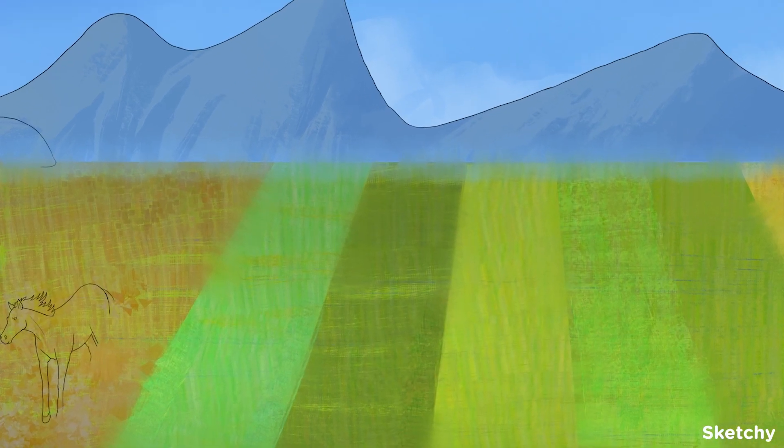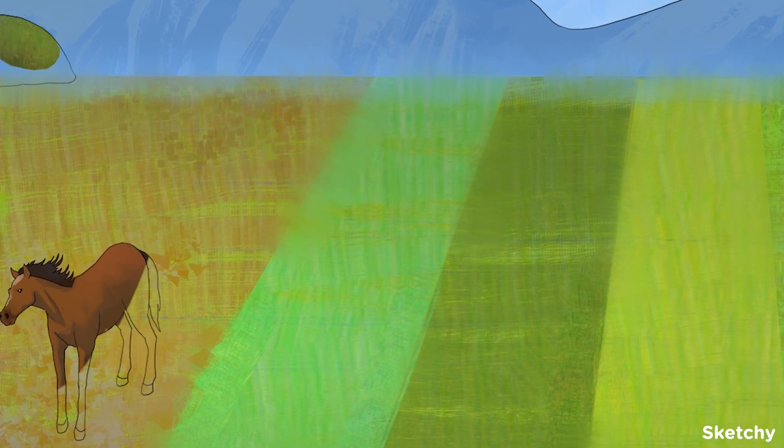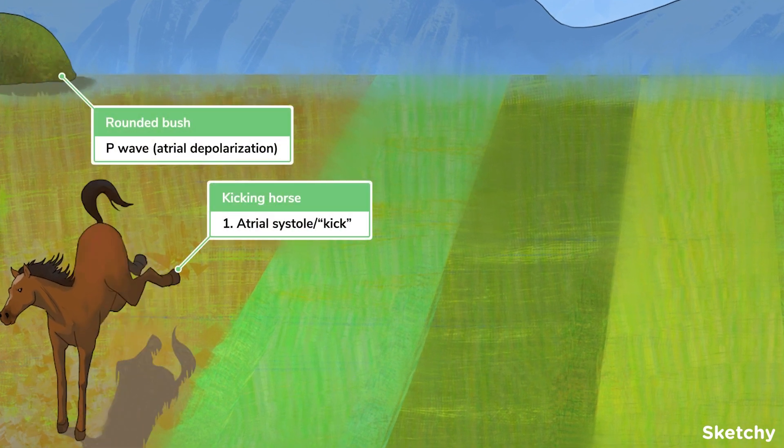The first phase of the cardiac cycle is atrial systole. This phase is directly preceded by the P wave on the ECG, which represents the electrical activation, or depolarization, of the atria. It also happens to look a little bit like this rounded bush in the background.